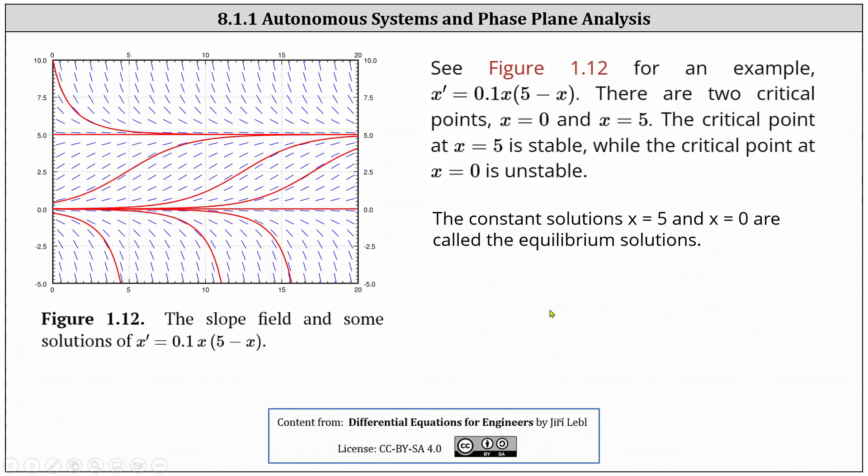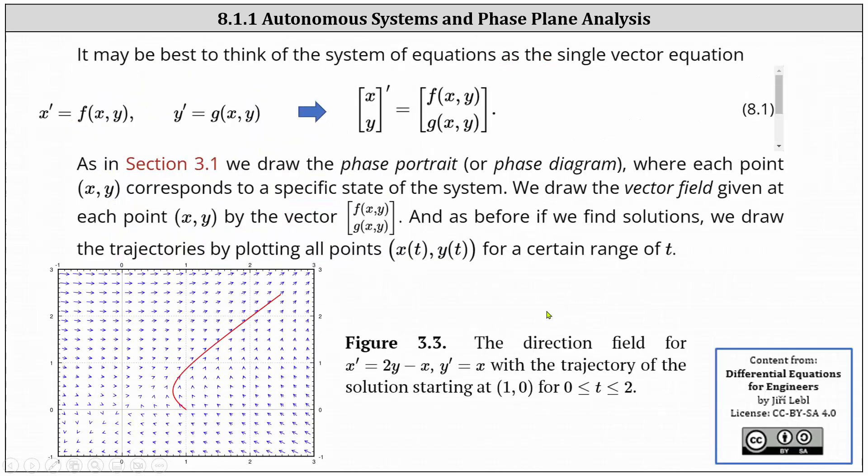So now going back to an autonomous system, it may be best to think of the system of equations as a single vector equation. Where if we're given x' = f(x,y) and y' = g(x,y), we can think of this as the derivative of the vector [x,y] equals the vector [f(x,y), g(x,y)].